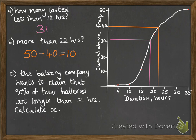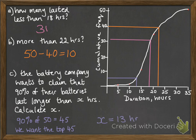The battery company wants to claim that 90% of their batteries last longer than X hours, and they want to know what X would be so they can make that claim legitimately. 90% of 50 is 45, and we want the top 45 to be more than this value. So we look for where the bottom five are, so we can say that 90% are above that amount. Reading off the graph, the bottom 10% only lasted up to 13 hours, so the other 90% lasted more than 13 hours.